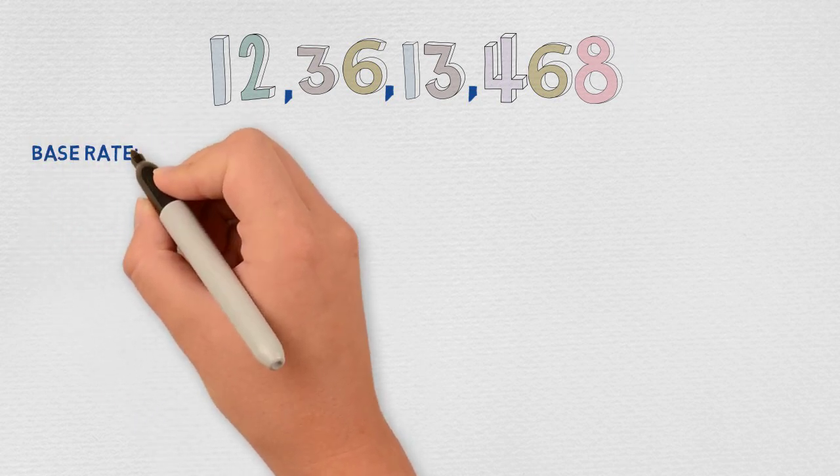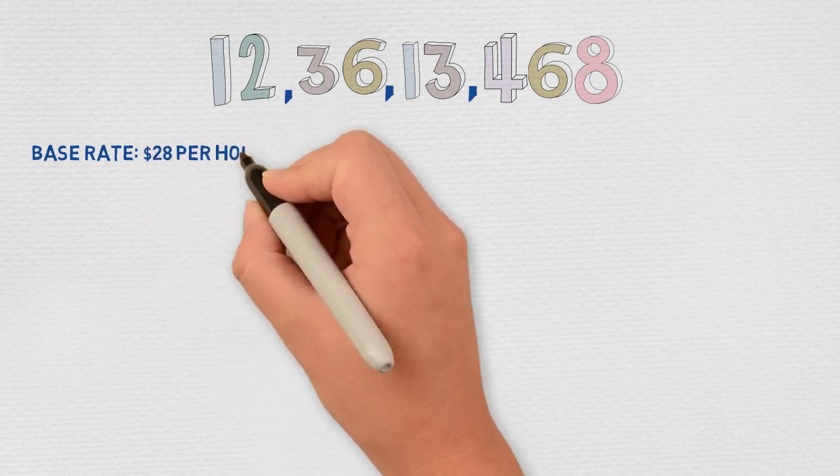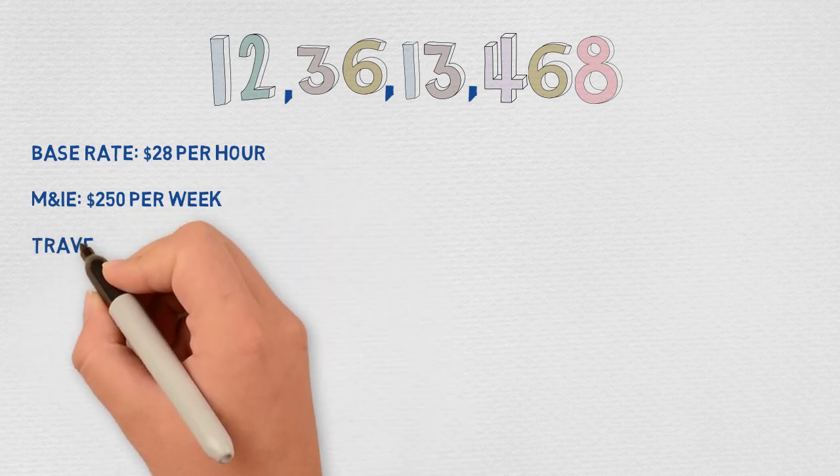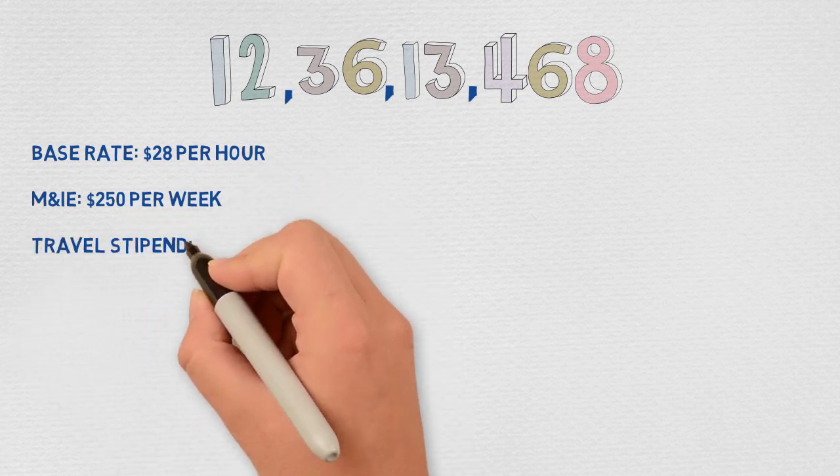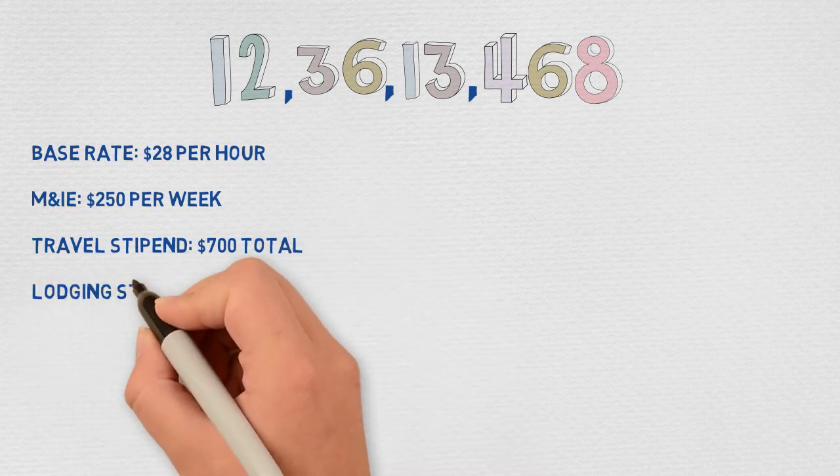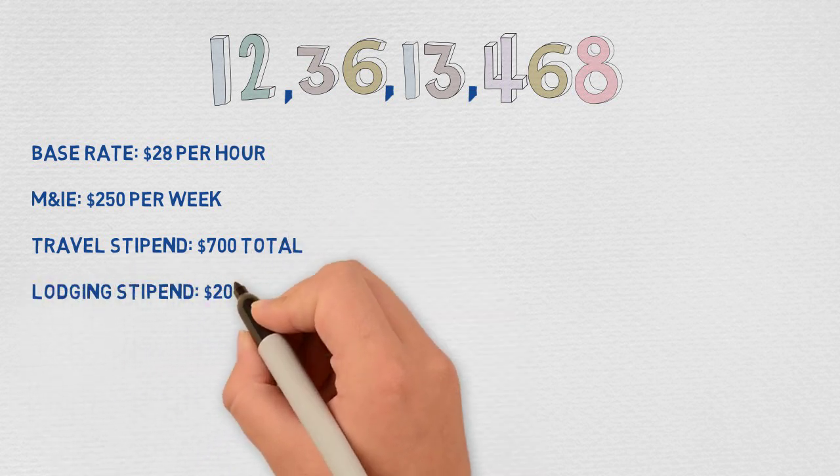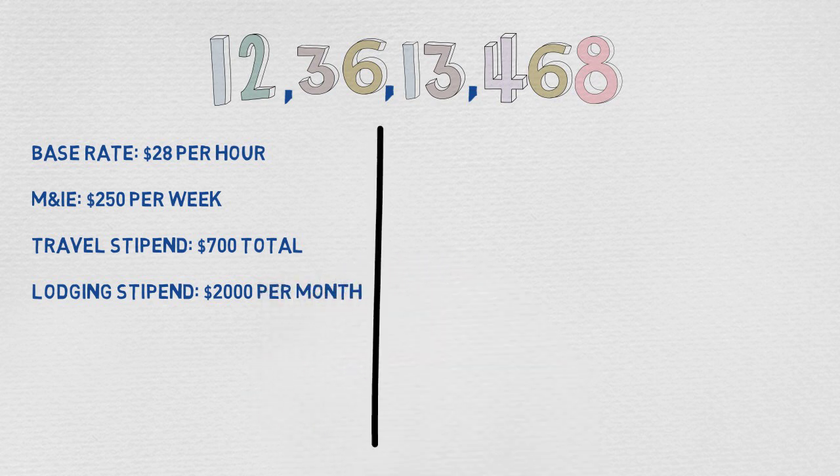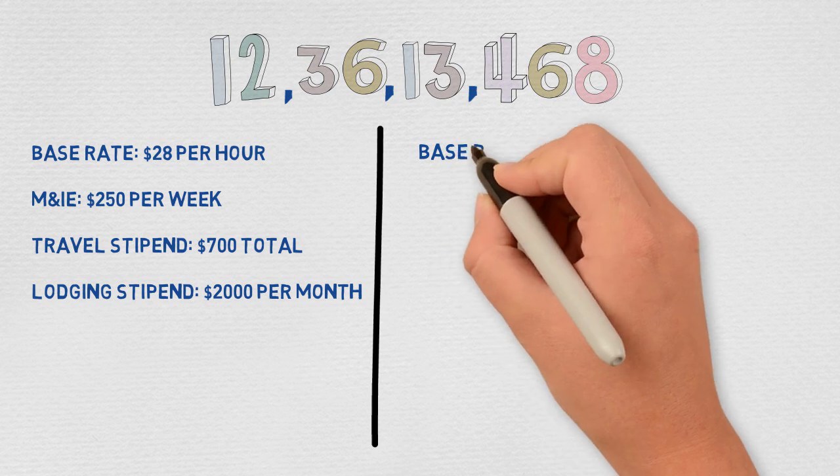Now if we received a quote for $28 per hour as a base rate, plus $250 per week for a meals and incidental expense stipend, plus $700 total for travel expenses, and $2,000 per month for a lodging stipend, then we can break everything down to an hourly figure using the contract's time variables.